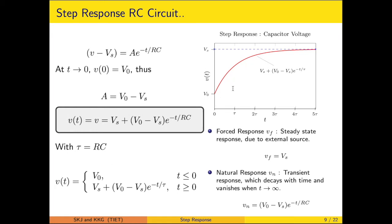From the response graph, starting from the initial voltage there is an exponential rise, ultimately attaining the steady state level Vs. The response is composed of two components: the natural response component and the forced (steady state) response component. The forced component is the steady state value Vs, approached as t → ∞. The transient component is expected to decay and completely vanish as t → ∞.